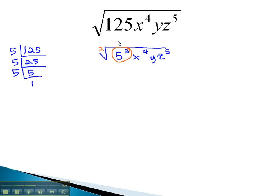On the 5 cubed, 3 divided by 2 tells us that one 5 comes out, but there is a remainder of 1 left behind inside the radical.